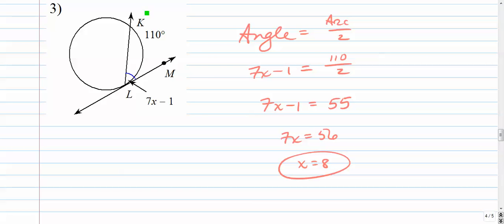x is 8. If we plug that back in here, we get 7 times 8 minus 1 is 55 degrees. And remember, this angle is half as big as the arc it opens up to. And that makes sense.